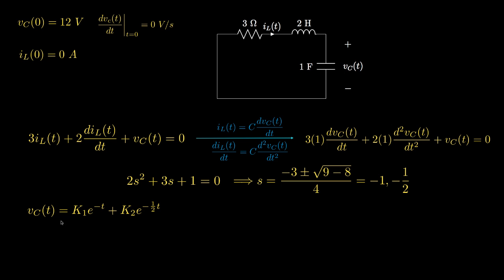The general solution for the capacitor voltage is VC = K1·e^(-t) + K2·e^(-t/2). Because the constant in the differential equation for the capacitor voltage is zero, the final value of this voltage will be zero, so there is no additional constant term in the expression for the capacitor voltage.